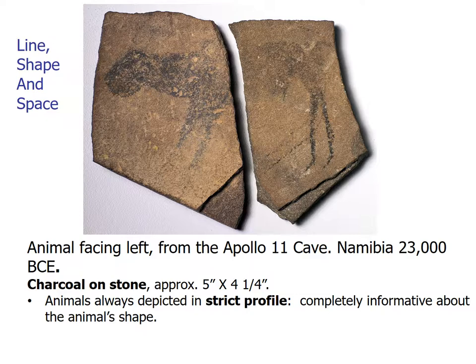Animals were always depicted in strict profile during the Paleolithic period, or Old Stone Age, because it is completely informative about the animal's shape — the head, body, tail, and legs are all clearly visible. The species depicted is unknown. Scientists explored this cave in 1969 and 1972 and found seven fragments of stone with paint on them, depicting five different animals. During this period, humankind went beyond recognition of human and animal forms in nature to representation.